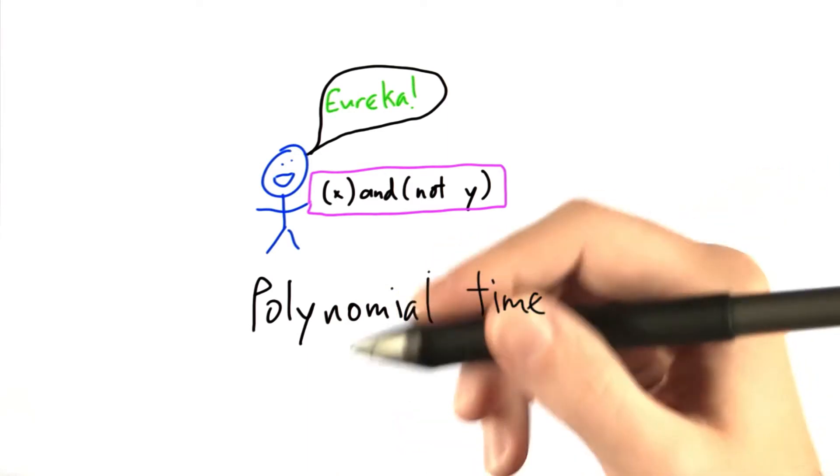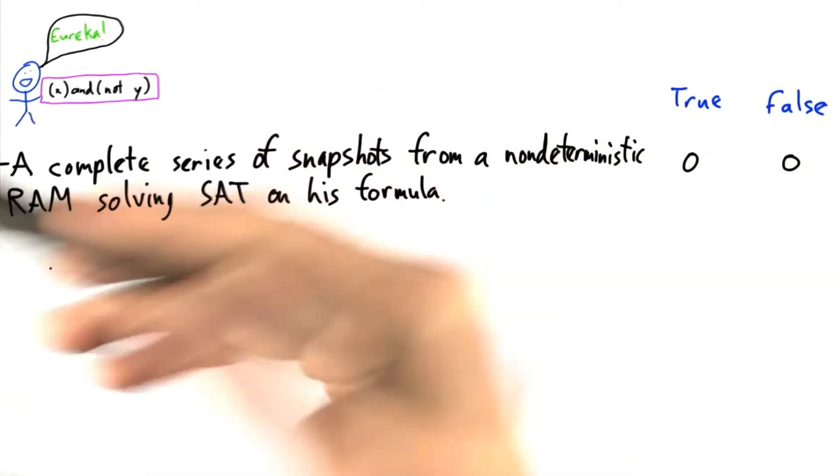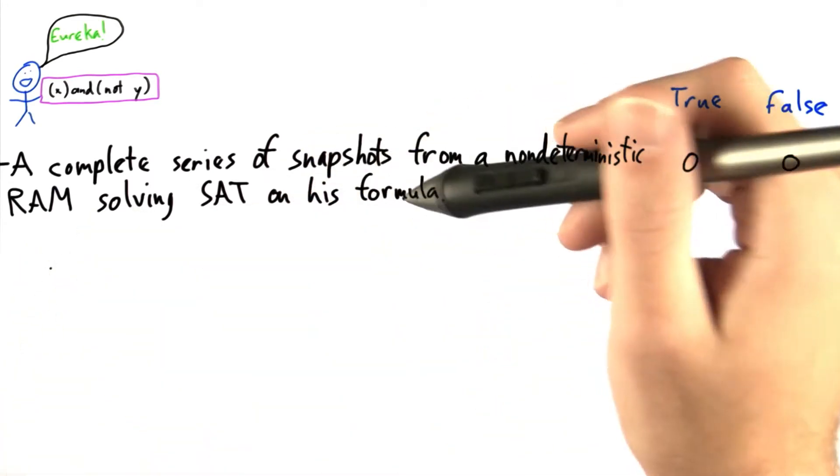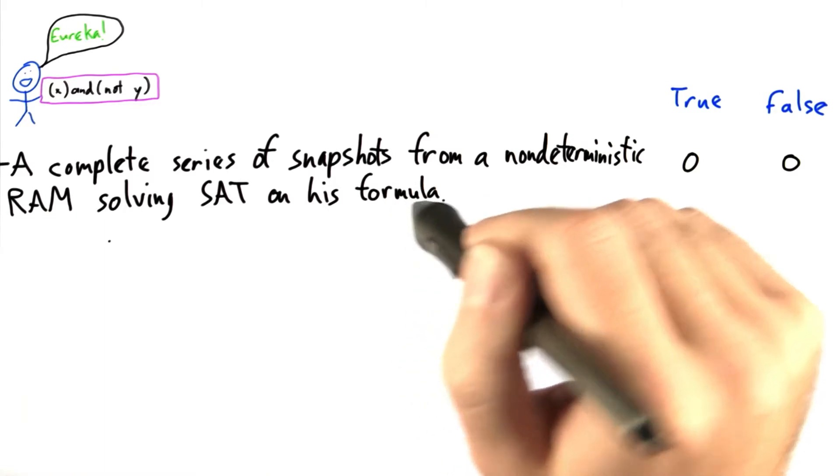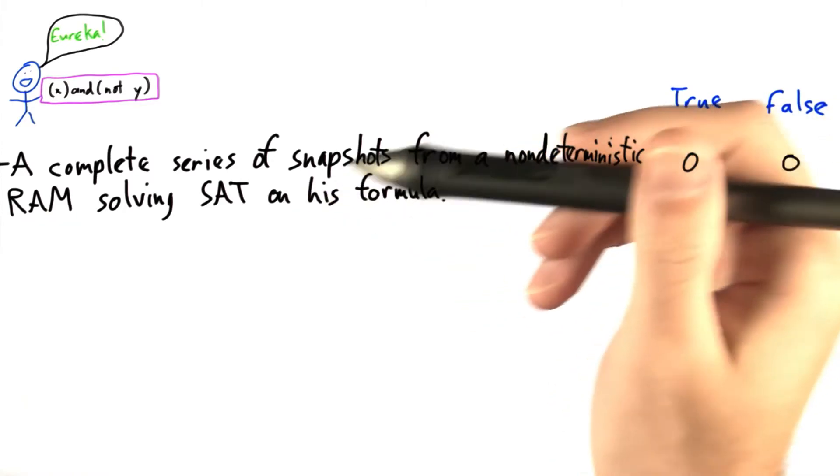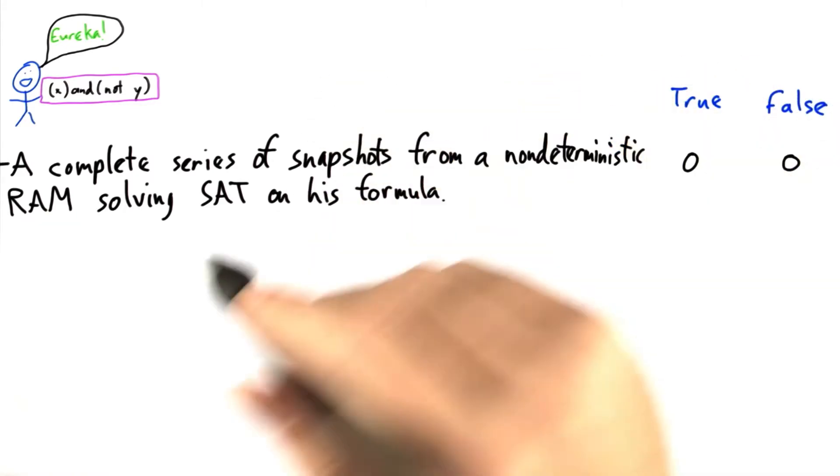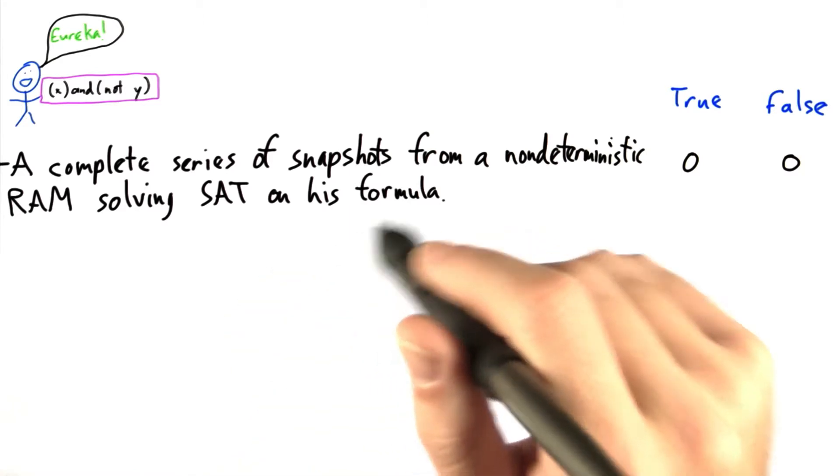So, how would we go about doing that? Let's say Bob came to us with a complete series of snapshots from a non-deterministic RAM solving SAT on his formula. Would that be enough for us to believe that he had a satisfiable formula?